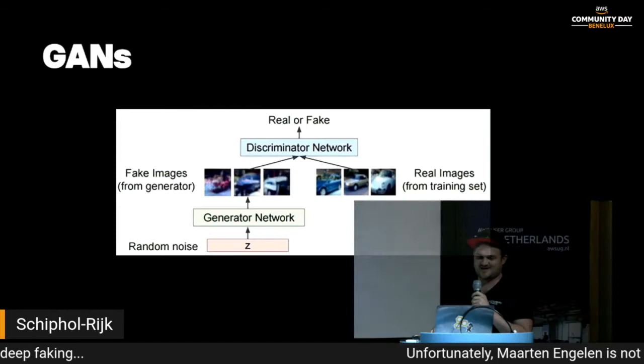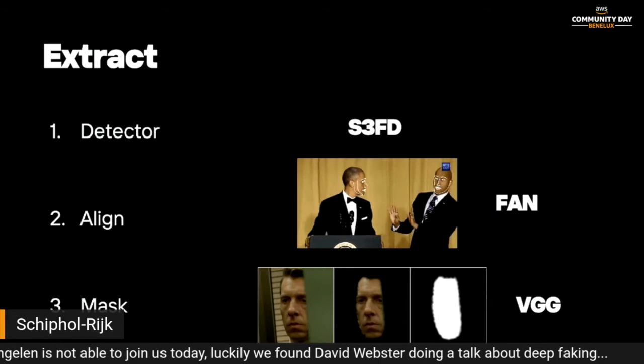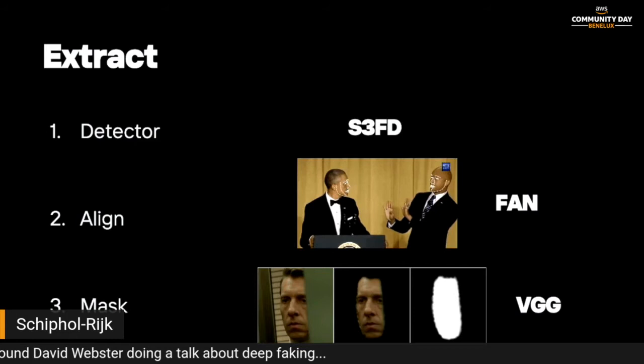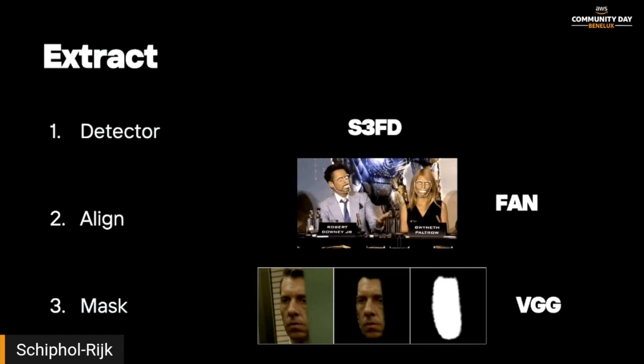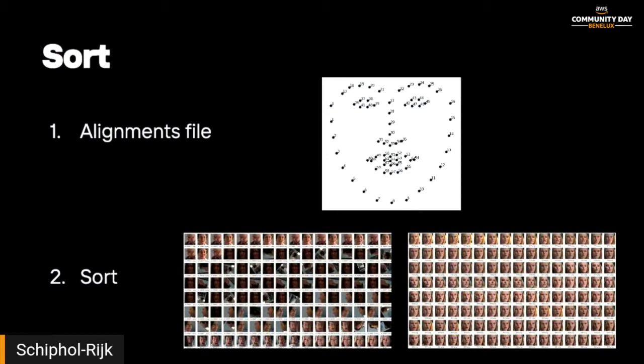In the extract phase, you use multiple neural networks: S3FD, a facial detector, to detect faces; FAN to figure out the alignments of those faces; and VGG to do mask segmentation of those faces. Then you create an alignments file of all those face alignments, and you do the data science work of sorting the pictures, getting them in a neat row, and deleting any unnecessary ones.